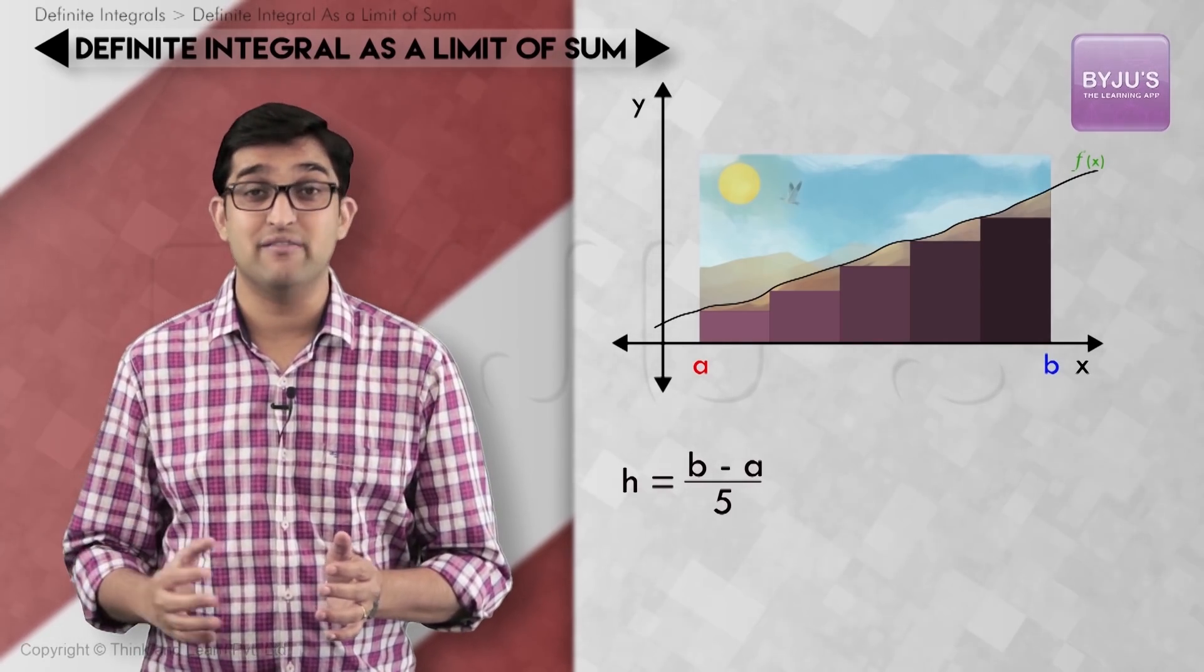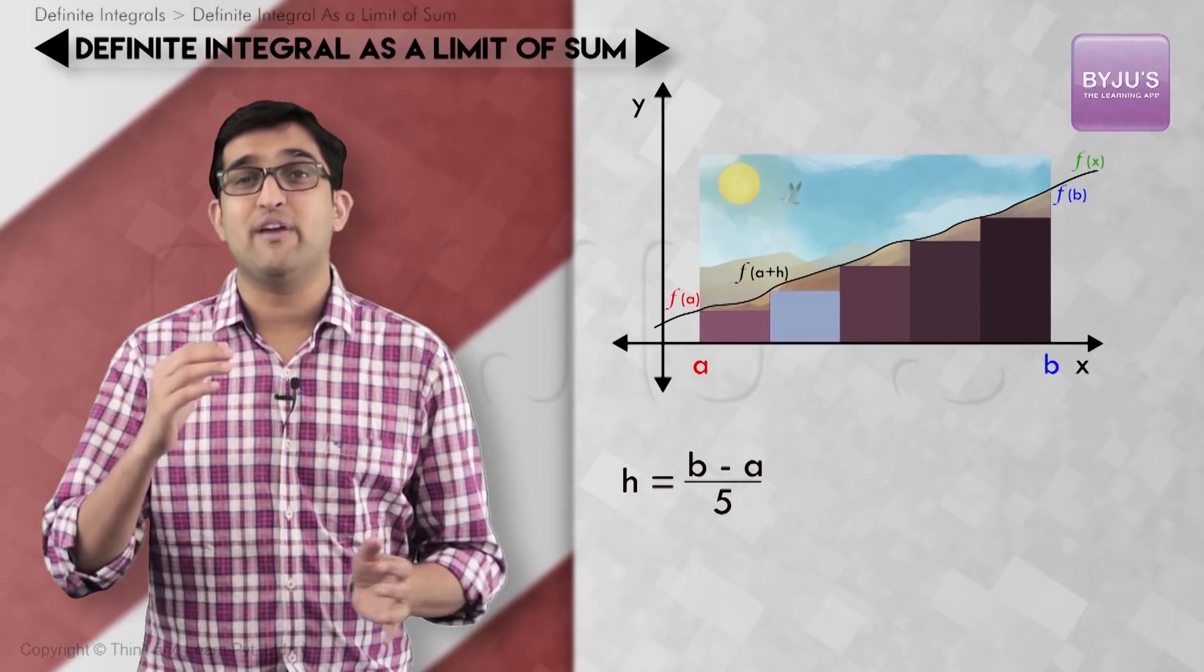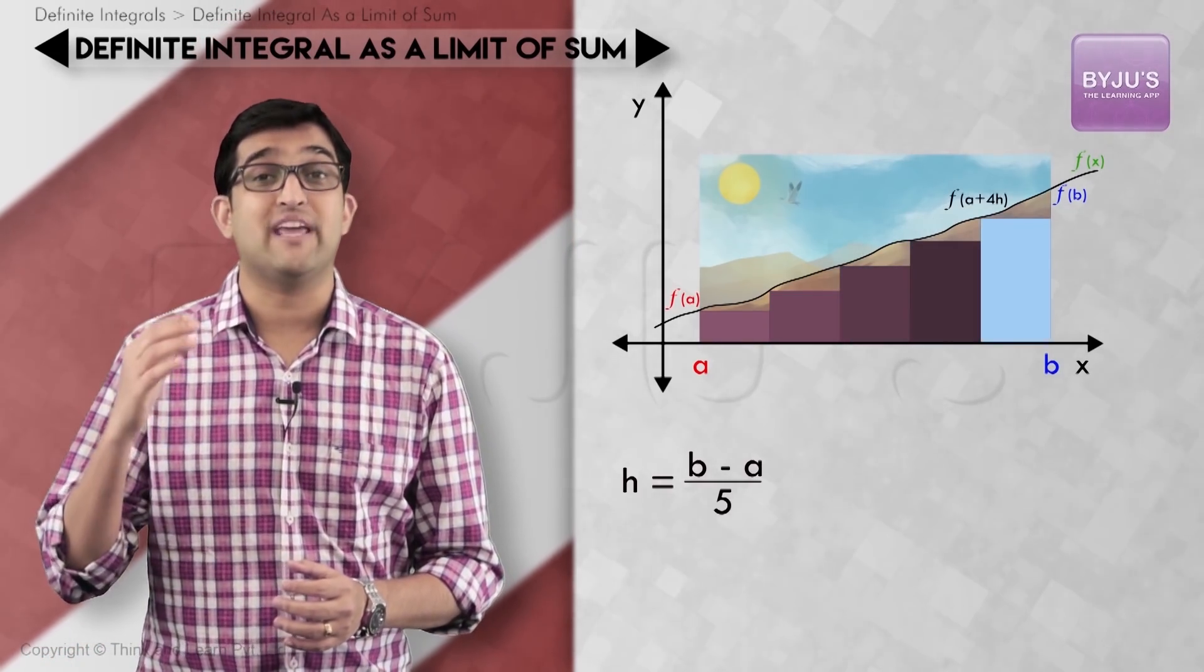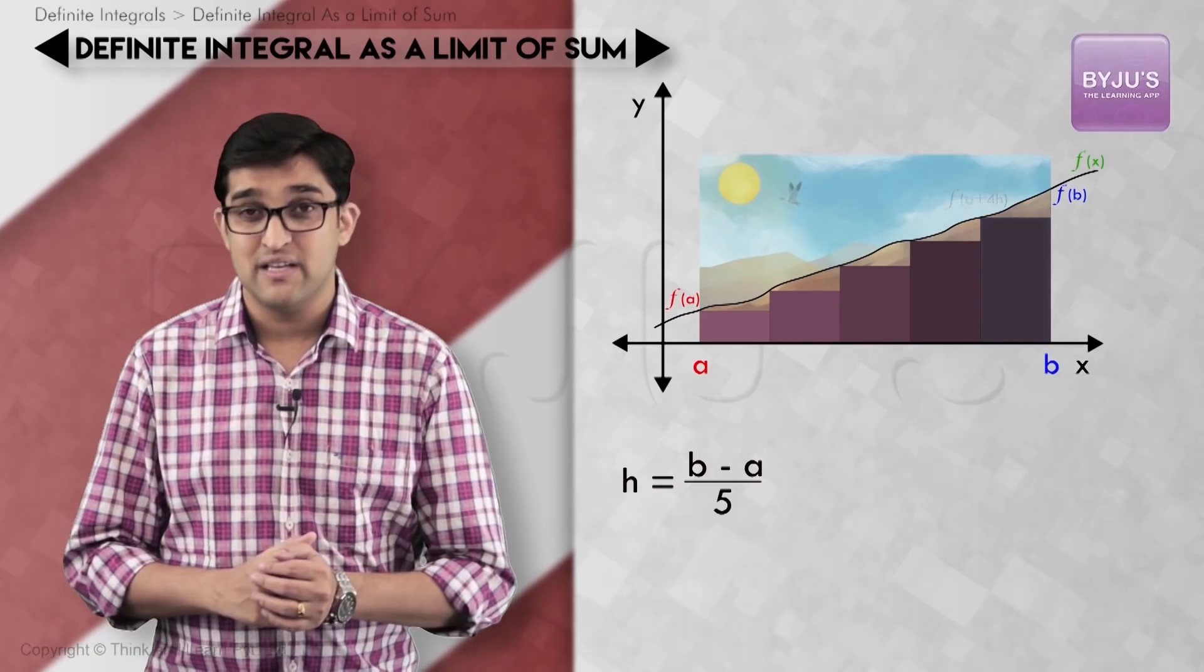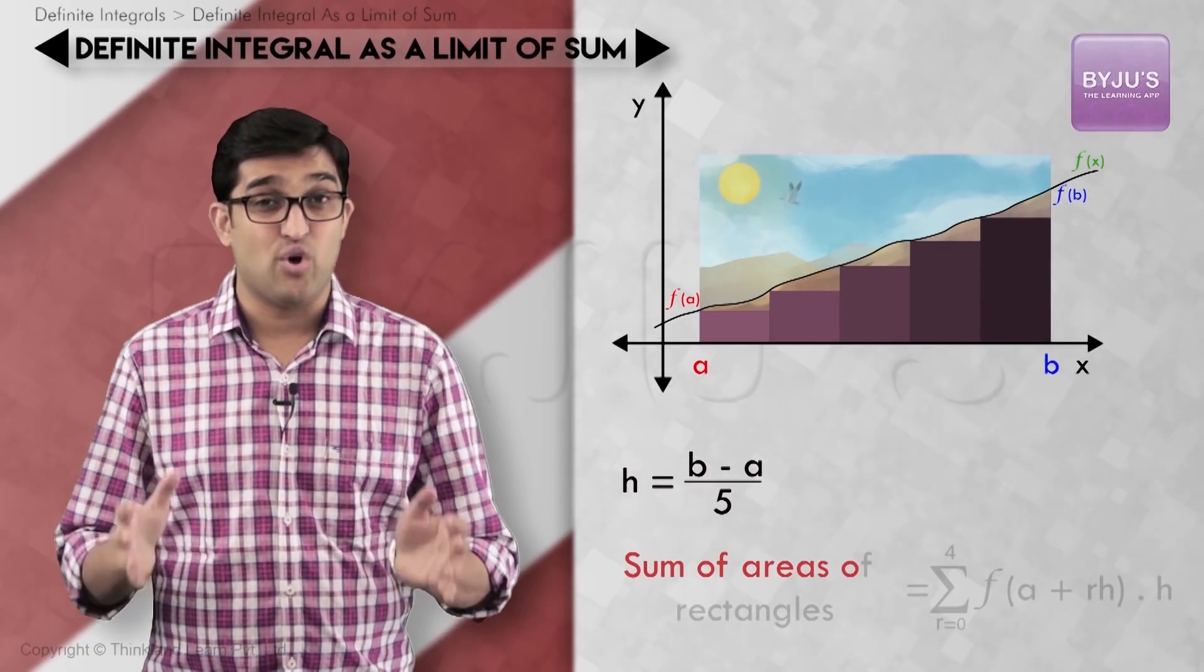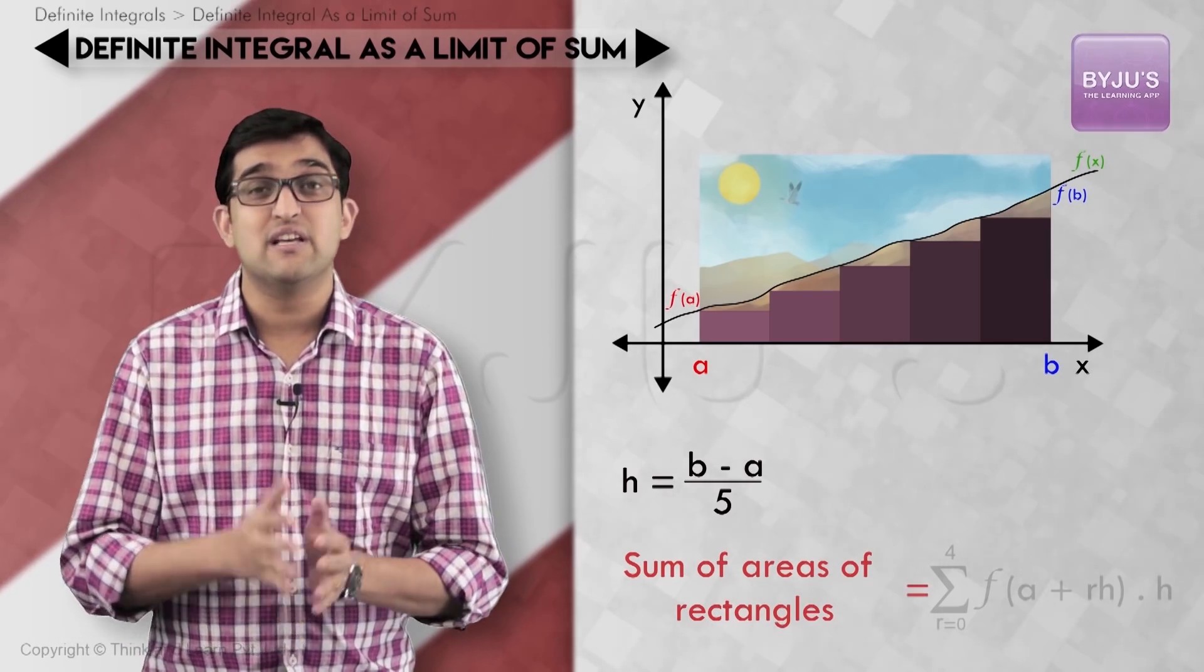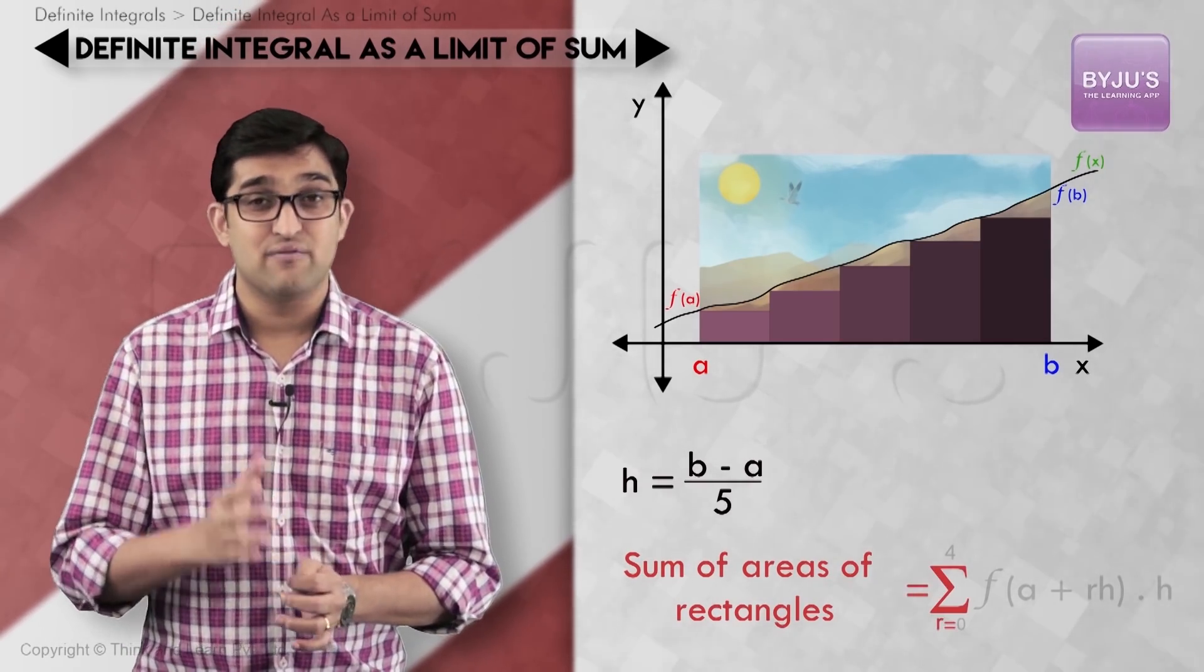And height of the individual rectangles will be given by f(a), f(a+h), f(a+2h), f(a+3h), and f(a+4h) respectively. The sum of the areas of these rectangles, if I add them all together, will be given by the expression: summation r varies from 0 to 4, f(a+rh) × h.